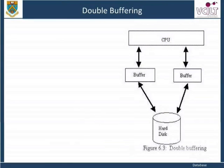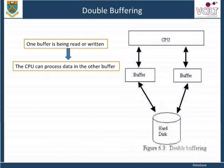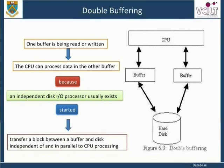Double buffering: while one buffer is being read or written, the CPU can process data in the other buffer. This is possible because an independent disk input-output processor usually exists that, once started, can proceed to transfer a block between a buffer and disk, independent of and in parallel to CPU processing. This technique is called double buffering and can improve disk access performance.